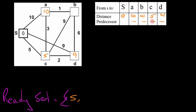For node C the distance is 5 and the predecessor is S; for node A the distance is 10 and the predecessor is S; for node D the distance is 9 and the predecessor is also S. We will continue with this loop until all nodes are included in the ReadySet. Once again we select the node with the shortest distance from the nodes not already in the ReadySet.